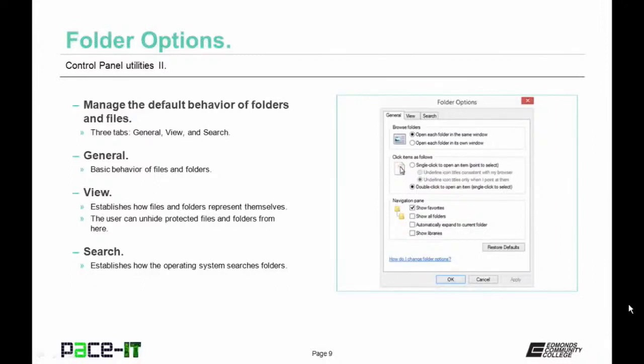From the General tab, you can make adjustments to the basic behavior of files and folders. From the View tab, you can establish how files and folders are represented — the user can unhide protected files and folders from here, which is the important one for a technician. The Search tab establishes how the operating system searches folders.